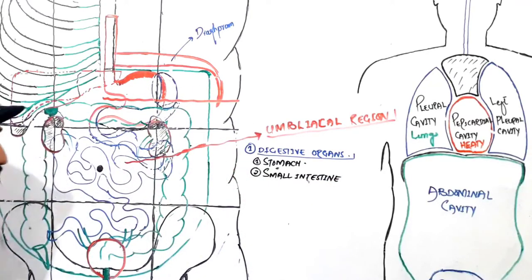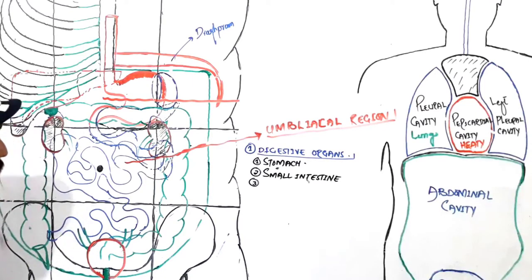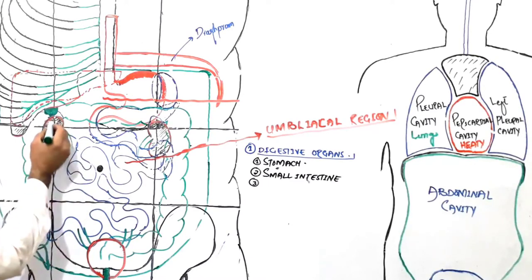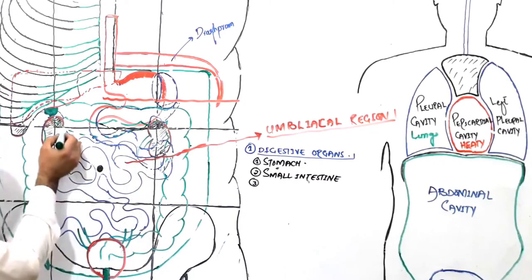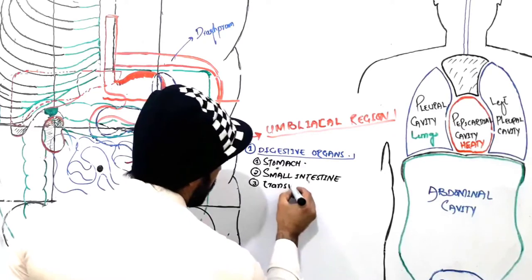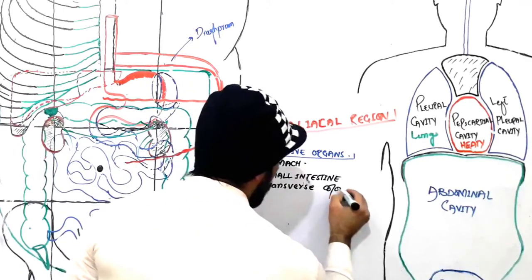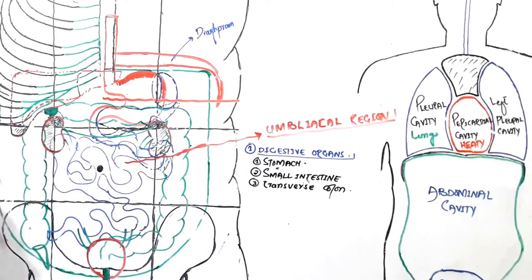Mostly the jejunal part of the small intestine is found in the umbilical region. The third important digestive organ found here is the transverse colon. Our transverse colon goes across like this — some parts are present in the epigastric region and some parts are found in the umbilical region. So the transverse colon, as part of the digestive organs, is partially present in the umbilical region.